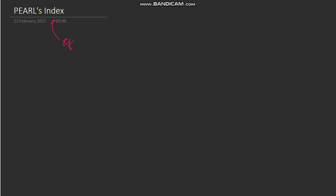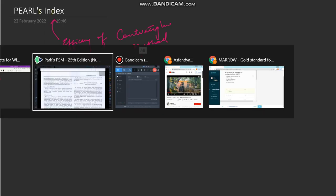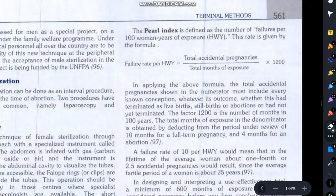Hello everyone, today we will be discussing a short concept in community medicine and contraception called Pearl's Index. Pearl's Index is basically a method of evaluation of the efficacy of a contraceptive method. Let's read what the textbook has to say — Park and Park defines Pearl's Index as failures per hundred women-years of exposure.